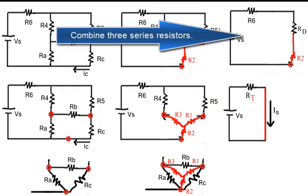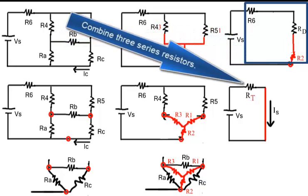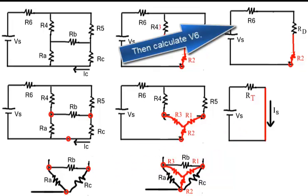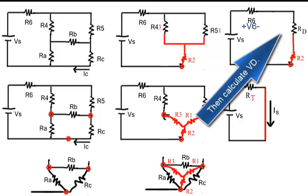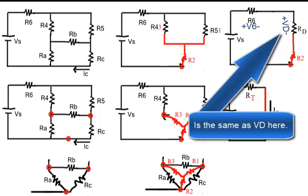Combine these three series resistors. Calculate the source current. Then calculate V6, calculate VD.